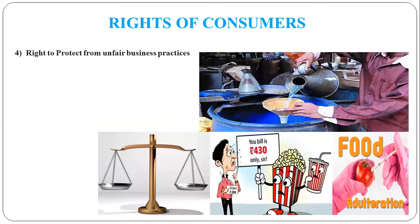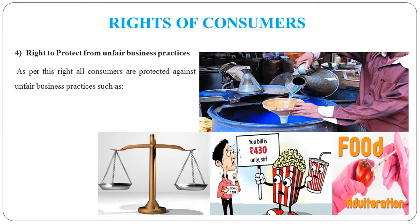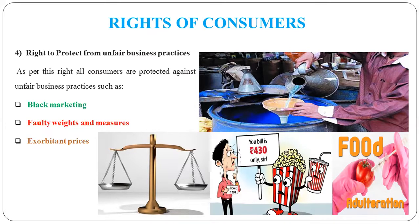Next is the right to protect from unfair business practices. Unfair business practices means doing wrong business. What is wrong business? Black marketing — selling at much higher prices in the market. Faulty weights and measures — it is written 500 grams but actually it is 450 grams. Exorbitant price — charging a lot of price. Adulteration — which you can see in grocery markets. These are unfair business practices. They are not good things, and these are things that some businessmen do, meaning they are exploiting the customer.